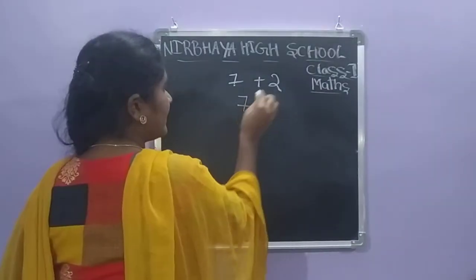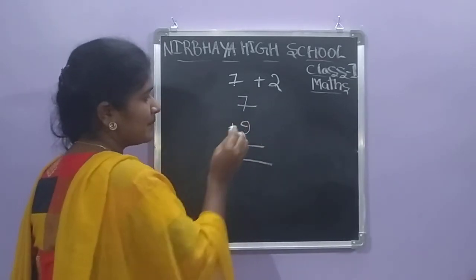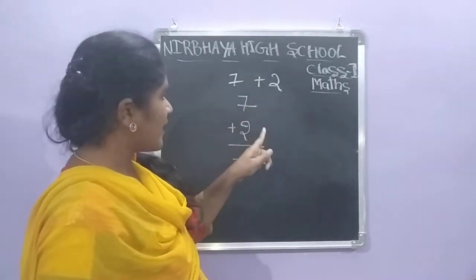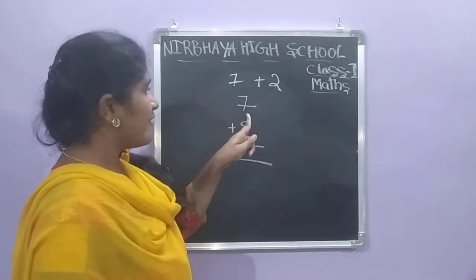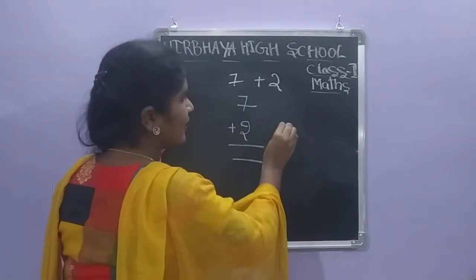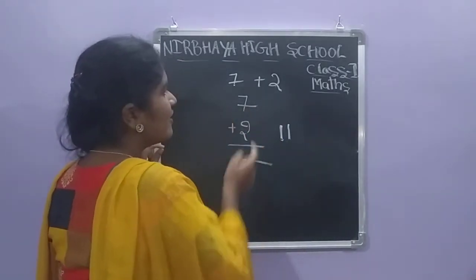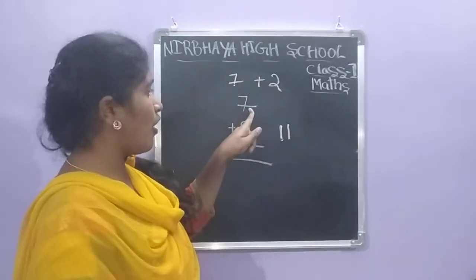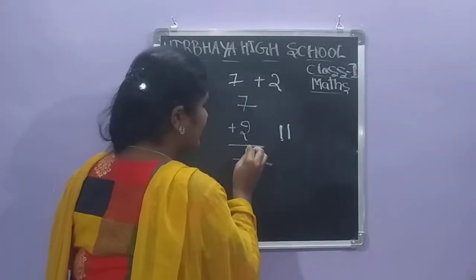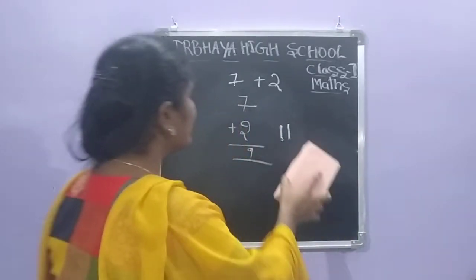We write the two numbers one below the other with a plus symbol. Seven is the first number, two is the second number. We draw two lines. After seven we count: eight, nine. So the answer is nine. This is the vertical column method.